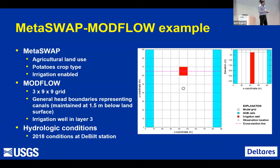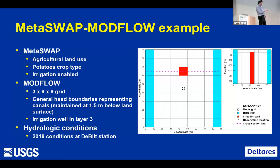This particular Metaswap example — I'm a software developer, so I do little tiny models. This is a nine-by-nine-by-three model: nine rows, nine columns, three layers. We've got an agricultural land use — potatoes — and irrigation is enabled. This would be like one of these polder systems in the Netherlands where we've got canals on both sides, an irrigation well, and a farm field with an observation point. In cross section, the upper layer is where the water table is fluctuating, and the lower layer is a deeper layer we can pull water from. We're representing relatively dry conditions in 2018.